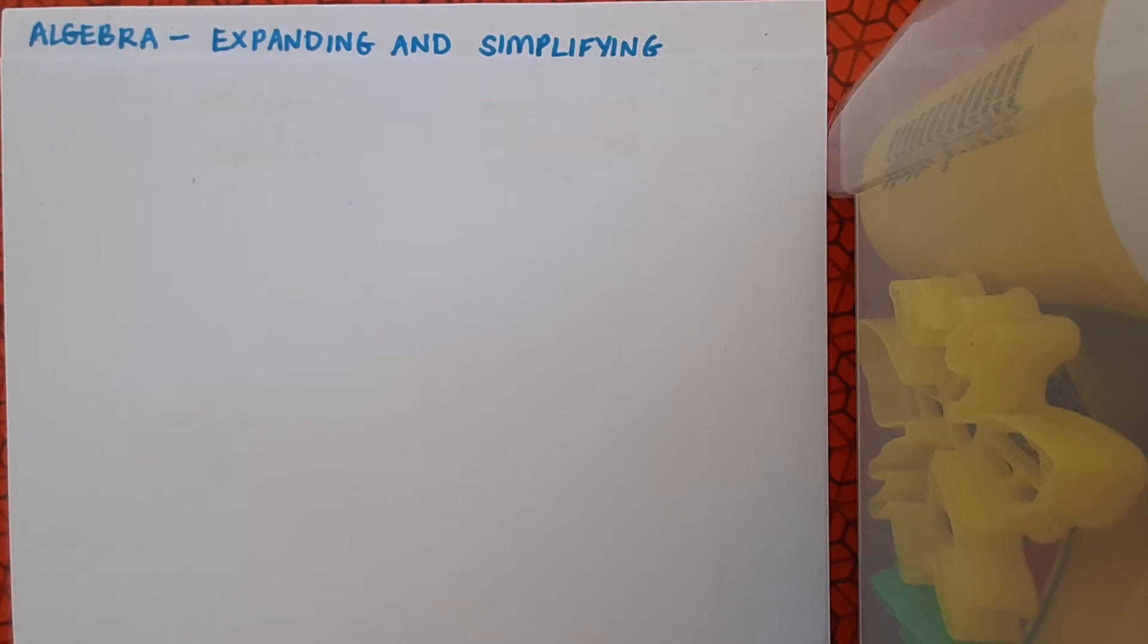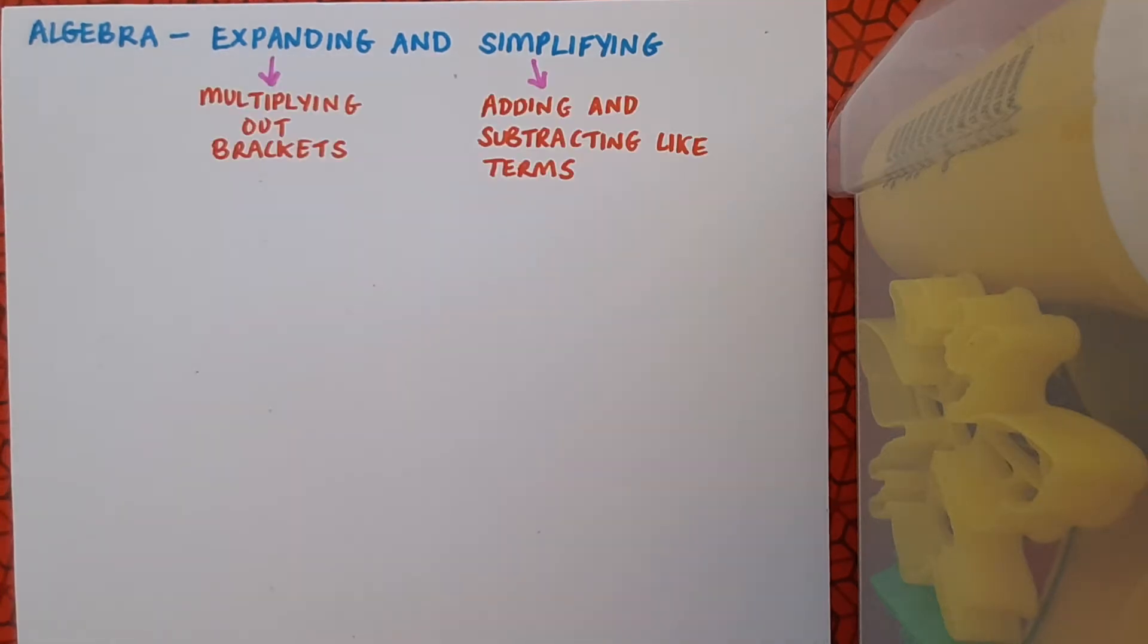This is an algebra video about expanding and simplifying. When we say expanding, we mean multiplying out brackets, and when we say simplifying, we generally mean adding and subtracting like terms, although just bear in mind that sometimes simplifying can cover the whole lot of this.